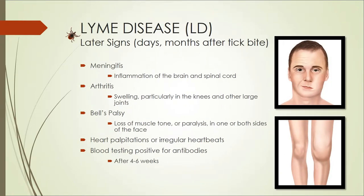If not treated in the early stages, the signs and symptoms of the illness become more severe. Inflammation to the brain and spinal cord may develop, and arthritis with swelling, particularly in the knees and other large joints. A condition called Bell's palsy, which is manifested by the loss of facial muscle tone, may develop, as well as heart palpitations or irregular heartbeats. After 4 to 6 weeks, a blood test will most likely come back positive for antibodies.